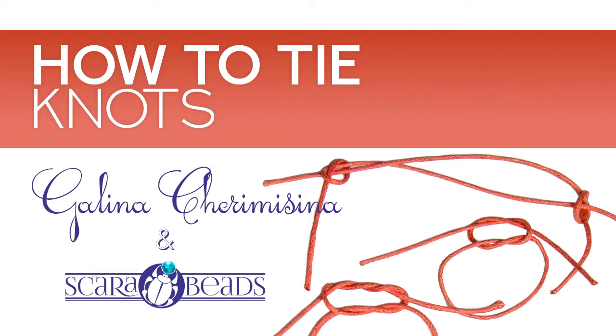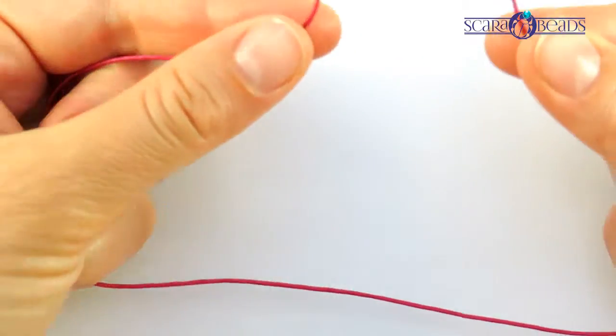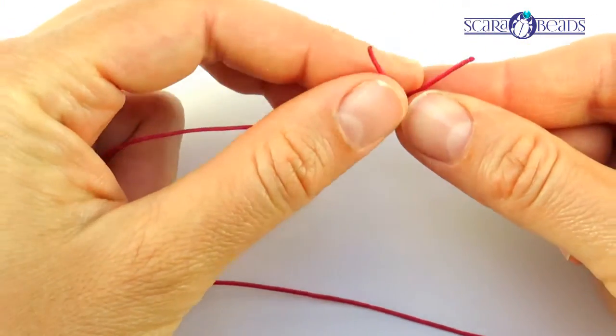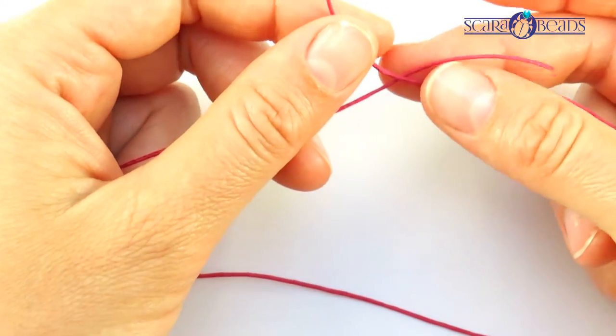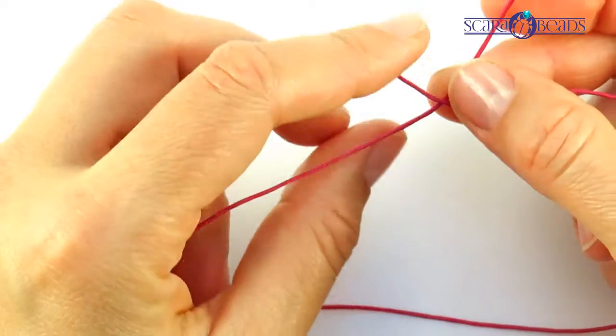Reef knot, weaver's knot, and overhand knot. For the beginning, we will learn how to do a reef knot. For that, let's tie two ends of the thread or ribbon, for example for a bracelet.